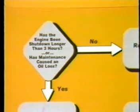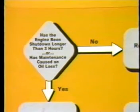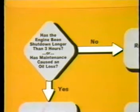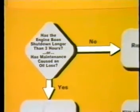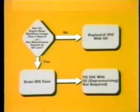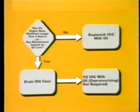This completes the checking procedures for the differential pressure indicator and the low oil level indicator. Replenishment is necessary when the quantity of oil in the IDG case is low. Replenishment consists of: one, determining if the engine has been shut down for more than three hours or if a maintenance action caused a loss of oil; two, draining the IDG case if either condition exists to prevent incorrect fill quantity; and three, replenishing the IDG oil system as required.